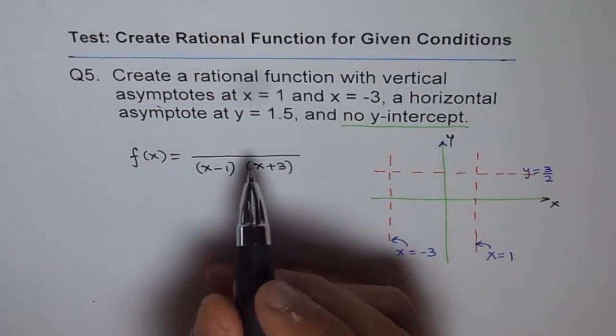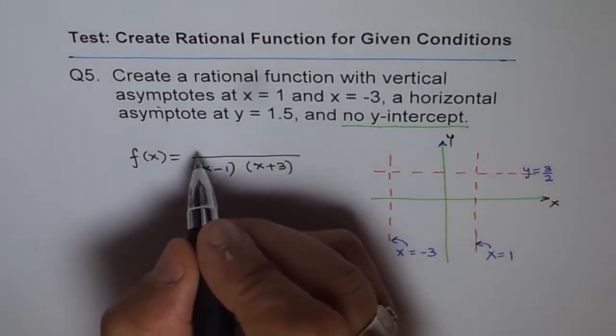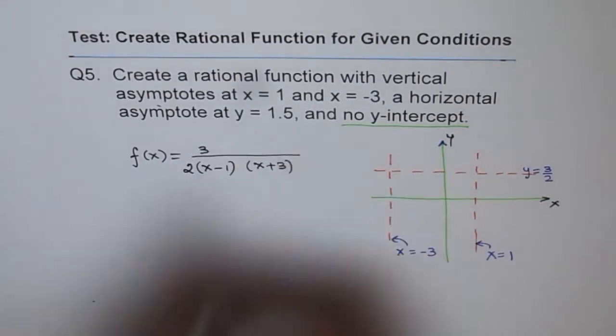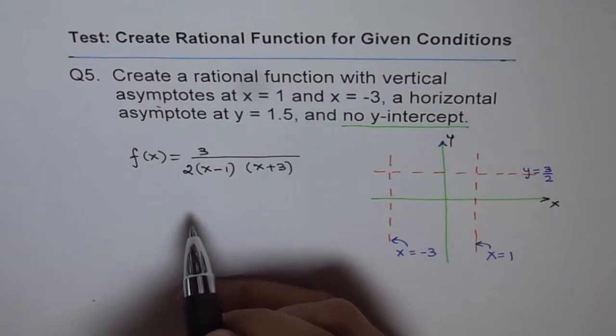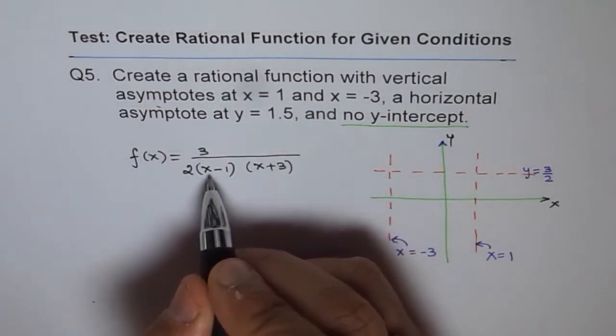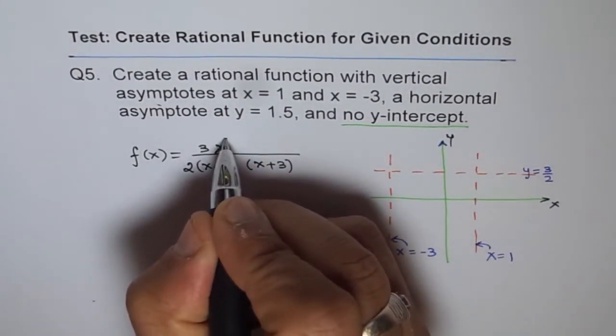So 1.5 I can also write 3 over 2. So let me write 3 over 2. It's good to write fractions. 3 over 2 is 1.5. Now that should be with numerator and denominator degree of 2, because denominator is x squared. So that will be x to the power of 2.